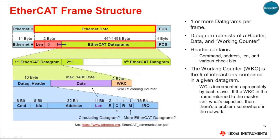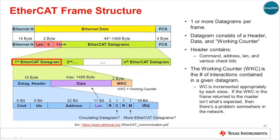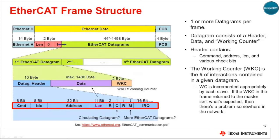Within a standard Ethernet frame, there are one or more EtherCAT datagrams carried in the payload section. Each datagram consists of a header — which contains the command, address, length, and various check bits to ensure the integrity of the network — the data to be transmitted, and a working counter, or WKC. The working counter indicates the number of transactions carried in the datagram. As the datagram makes its way through the EtherCAT slave nodes, each node addressed by that datagram will in turn increment this counter. If the WKC field in the frame returned to the master does not match what's expected, then an error somewhere in transmission or network nodes has been detected.